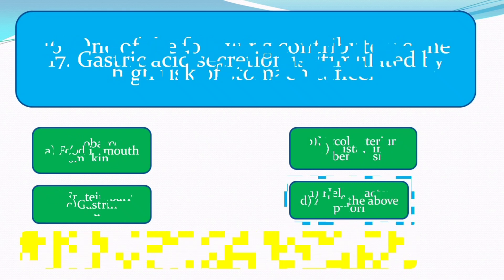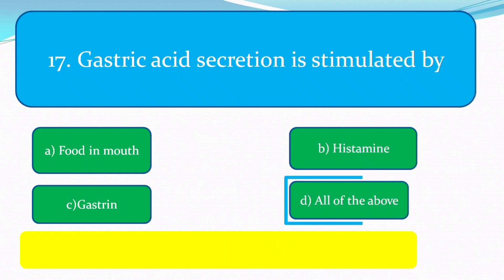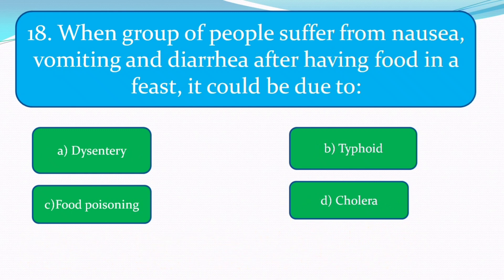Gastric acid secretion is stimulated by food in the mouth, histamine, and gastrin. The correct answer is all of the above. When a group of people suffer from nausea, vomiting, and diarrhea after having food together, it could be due to food poisoning.